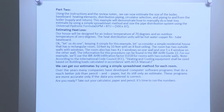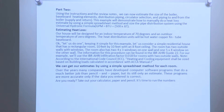For our example, we'll use the IBR AHRI infiltration factor of 0.018 for rooms with two outside walls. Note: according to the National Code Council, heating and cooling equipment should be sized based on building loads calculated in accordance with the ACCA Manual J. We can get our estimates by using the simple spreadsheet method for each room. Over the years, many companies have developed computer software programs that do a much better job than paper and pencil, but it's still only an estimate — these programs are more accurate only if the data you enter is correct. Are you ready? Take out your calculator, paper and pencil. It's time to run the numbers.